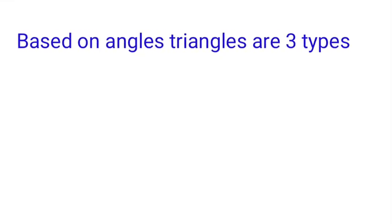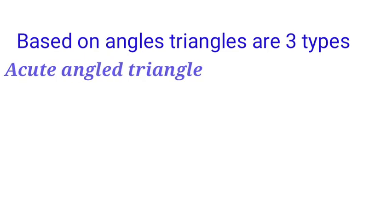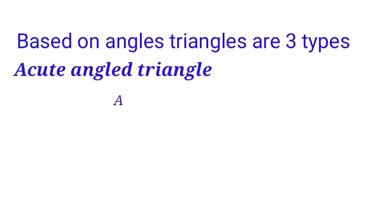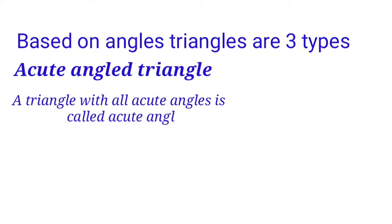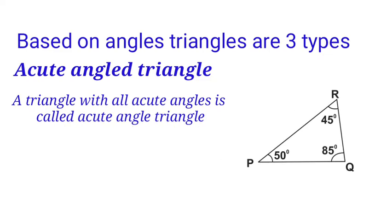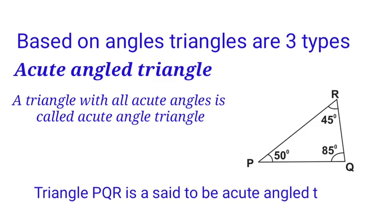Based on angles, triangles are of three types. First: acute angled triangle. A triangle with all acute angles is called an acute angled triangle. Observe the figure — in triangle PQR, all three angles are acute: 50 degrees, 85 degrees, and 45 degrees. So triangle PQR is an acute angled triangle.